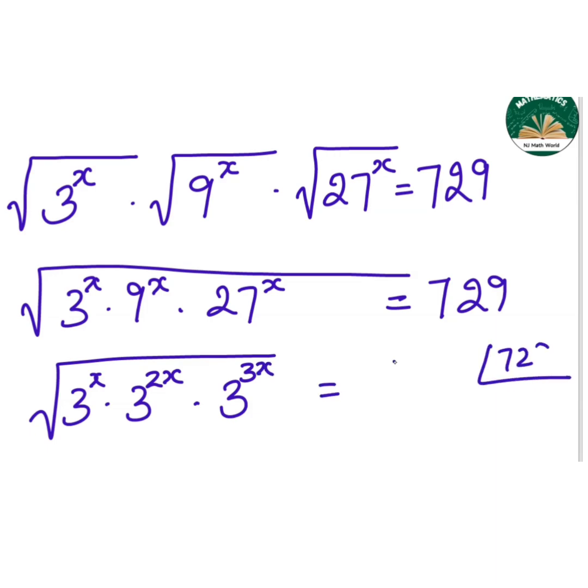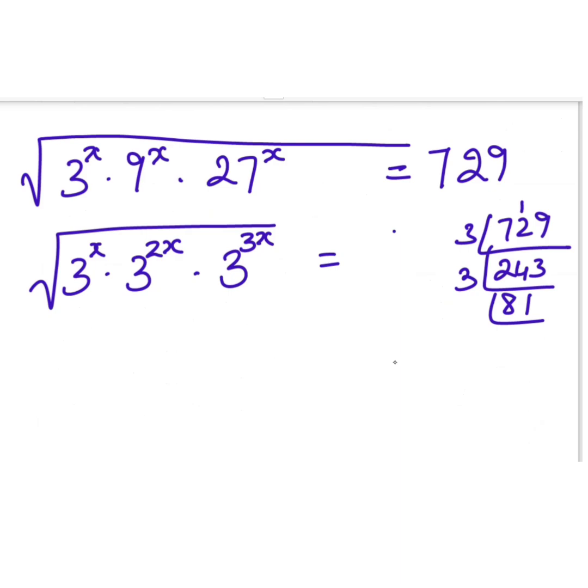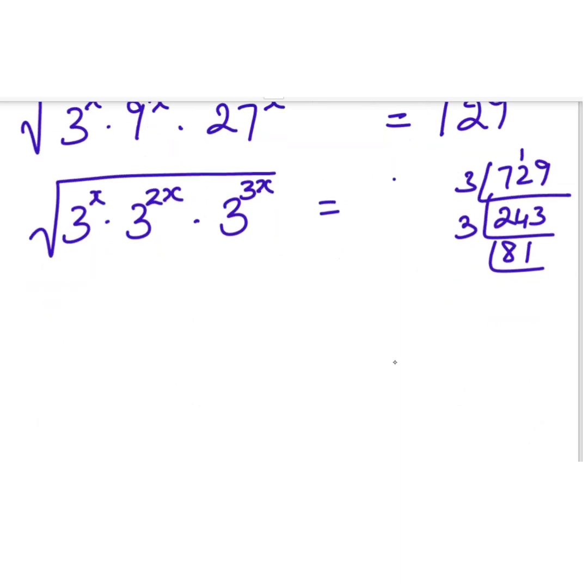Just find the factor for 729. It will be 3, then 3, then 3, then 3, then 3, again 3. So it is 3 to the power of 6.